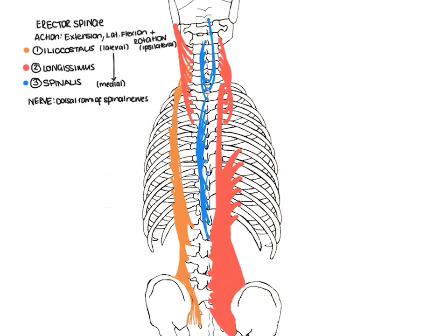Just going over the parts of the erector spinae moving from lateral to medial: first the iliocostalis, indicated in orange, which runs from the ilium up to the angles of the ribs; then the middle band, the longissimus indicated in red, which takes its origin from the thoracolumbar fascia, sacrum, and posterior iliac crest and inserts along the transverse processes; and finally the medial band, the spinalis, which runs along the spinous processes. Collectively, these three form the erector spinae.